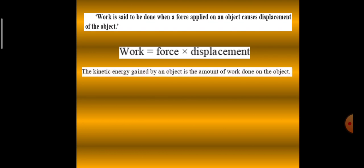The kinetic energy gained by an object is the amount of work done on the object. And we had derived the equation for kinetic energy, which said that kinetic energy is half mass into velocity square.